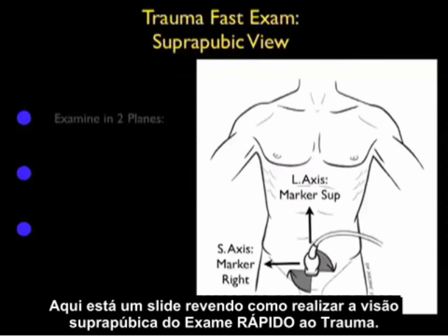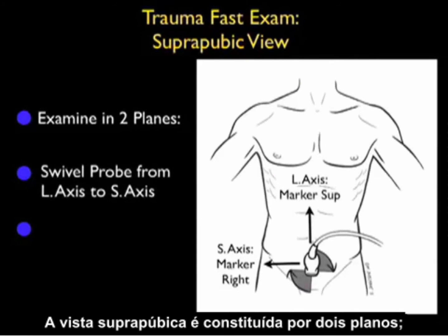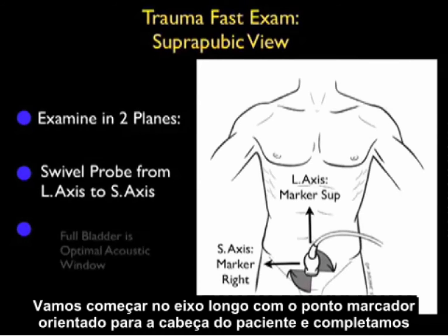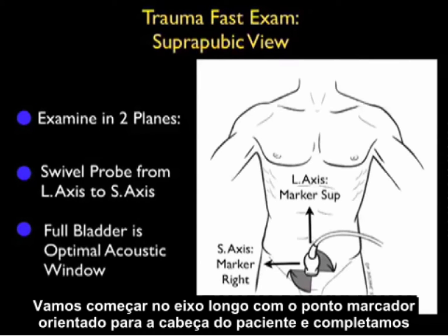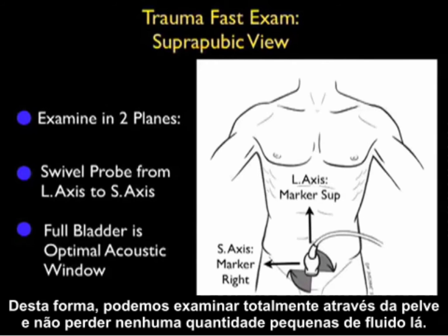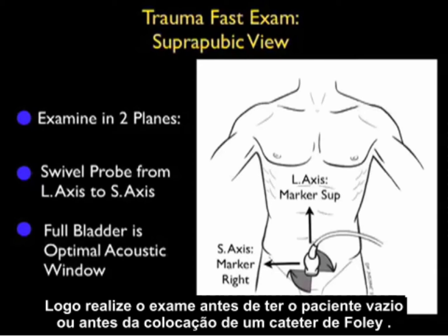Here's a slide reviewing how to perform the suprapubic view of the trauma FAST exam. In contrast to the upper quadrant views where we looked only in a long axis configuration, the suprapubic view is made up of two planes. We want to look in both long and short axis, with the marker dot oriented towards the patient's head, then complete the exam by moving the probe into short axis with the marker dot towards the patient's right side. This way we can fully scan through the pelvis and not miss any small amounts of fluid. It's optimal to perform the examination with a full bladder as an acoustic window, so perform the exam prior to having the patient void or placing a Foley catheter.